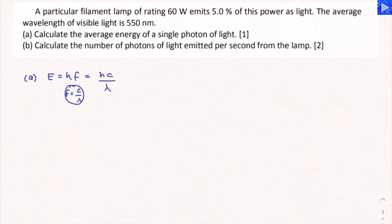So calculate the average energy of a single photon of light. All we need to do here is substitute in some values because we were given the data. h is Planck's constant, 6.63 times 10 to the minus 34. c is the speed of light, 3 times 10 to the 8. And the wavelength is given to us, 550 times 10 to the minus 9.